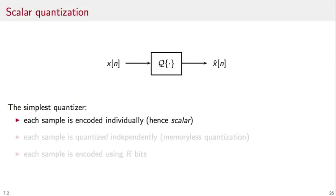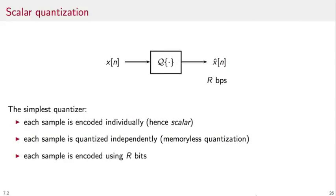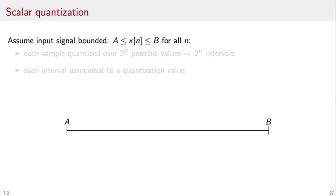The simplest quantizer is the scalar quantizer. In this quantizer, each sample is encoded individually, so we don't take into account relationship between neighboring samples. Each sample is quantized independently, so there is no memory of previous quantization operations, and each sample is encoded using r bits. So the rate here is r bits per sample.